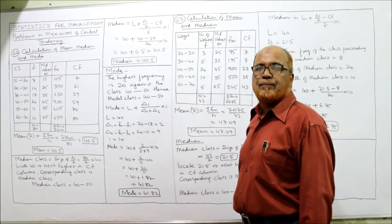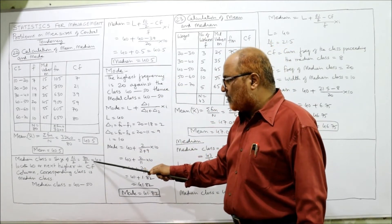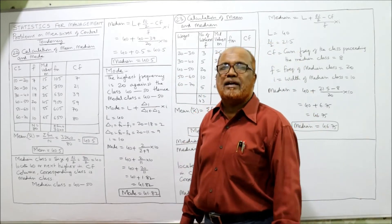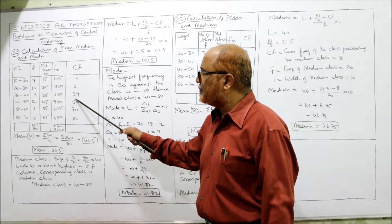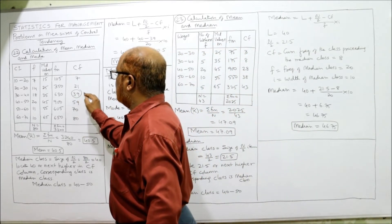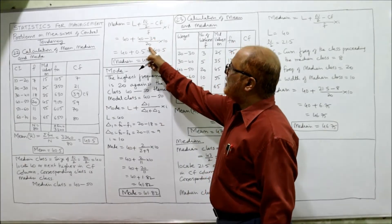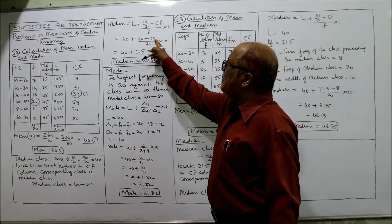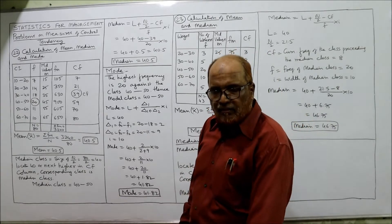The formula for median is: l + (n/2 − cf) ÷ f × i. Here l = 40 (lower limit), n/2 = 40. The cf is the cumulative frequency of the class preceding the median class; the class before 40–50 is 30–40, with cf = 39. The frequency of the median class f = 20, and width i = 10. So: 40 + (40 − 39) ÷ 20 × 10 = 40 + 0.5 = 40.5 is the median.